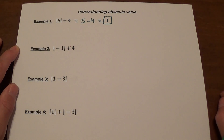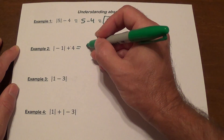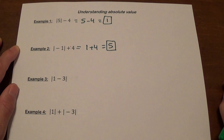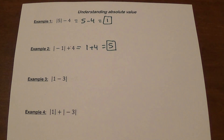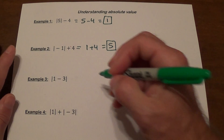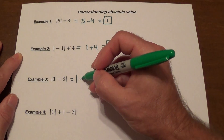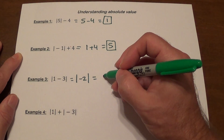Example 2: the absolute value of negative 1, plus 4. Again, we have to do anything inside the absolute value first — it's almost like grouping symbols. The absolute value of negative 1 is 1, plus 4, and the answer is 5. Example 3: inside the absolute value we have an operation, so that must be performed first. We do 1 minus 3, keeping the absolute value. 1 minus 3 is negative 2, then the absolute value of negative 2 gives us 2.